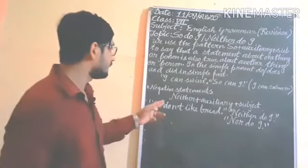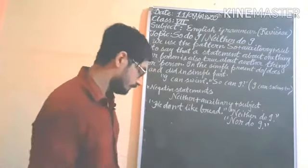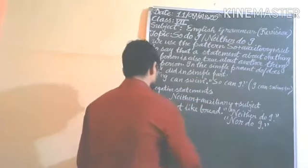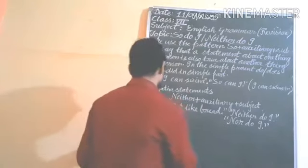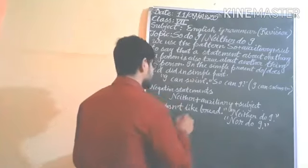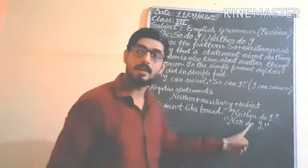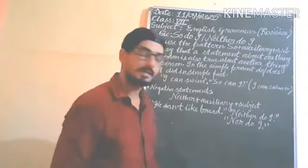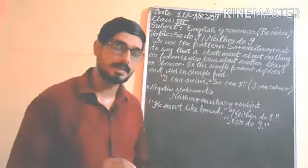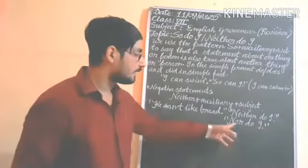In a negative statement, we use 'neither plus auxiliary plus subject'. For example: 'He does not like bread' — we respond with 'Neither do I.' We can also use 'nor do I' in place of 'neither do I'.